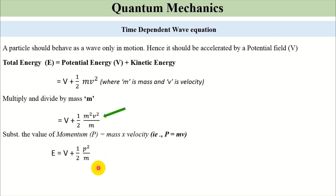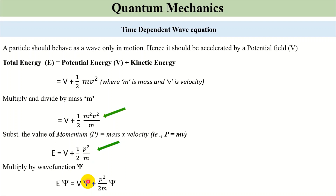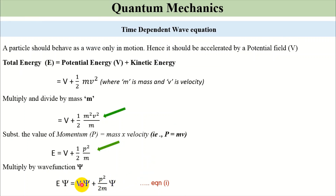We now apply a wave function ψ to get: Eψ = Vψ + p²ψ/2m. This is equation number one, which we have to derive. We need to find what p²ψ is and what Vψ is, then substitute into equation one to obtain Schrödinger's time-dependent wave equation.